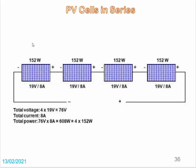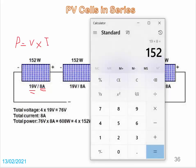Let's look at another example with current and voltage. Each solar panel produces 19 volts and 8 amperes. The power is 152 watts. To calculate power we use P equals V multiplied by I, so 19 volts multiplied by 8 amperes equals 152 watts.